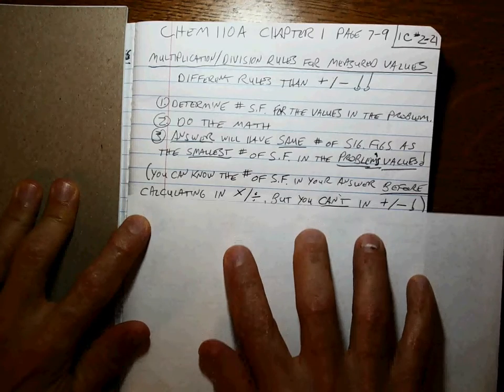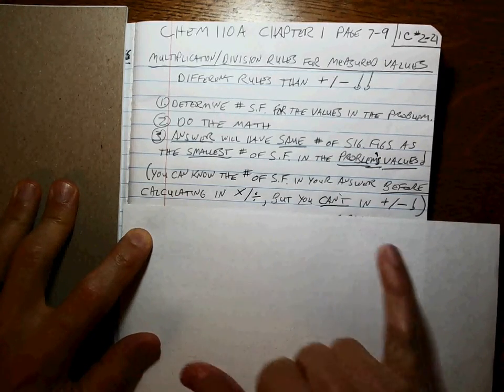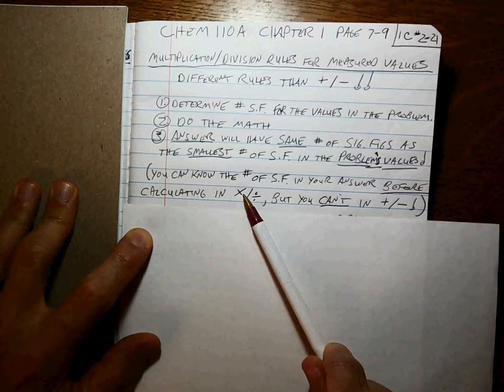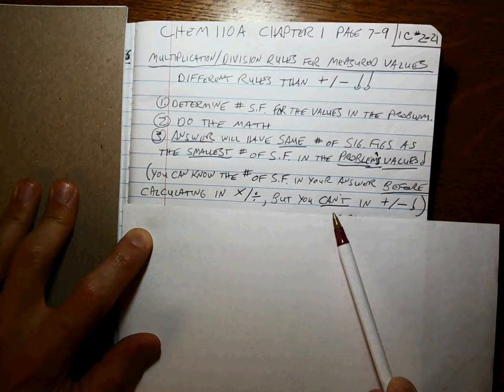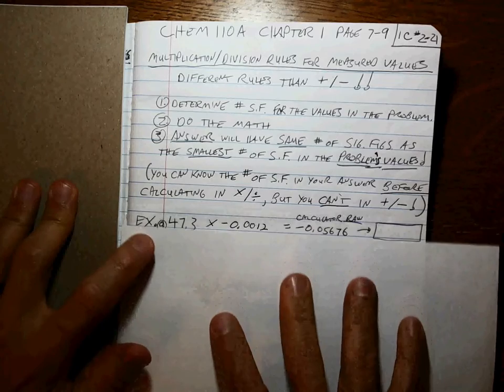The point here, before we get started, is that you can know the number of sig figs in your answer before even doing the calculation whenever you're doing multiplication and division, but that is not something you can do in addition and subtraction. Alright, so let's take a look.